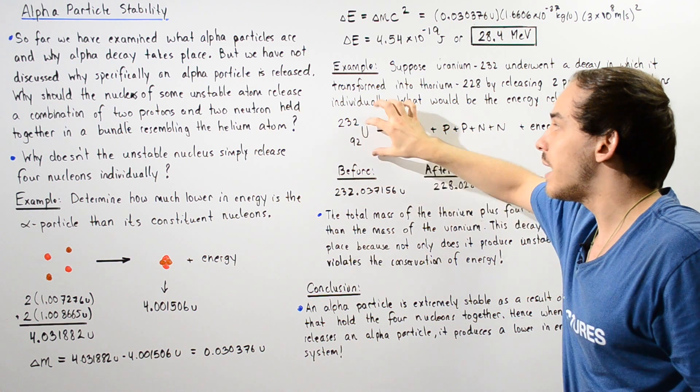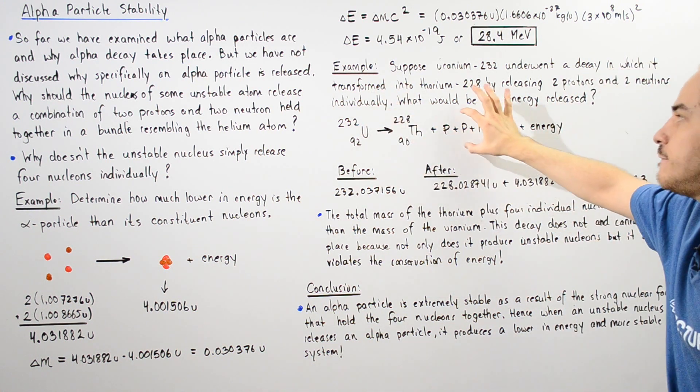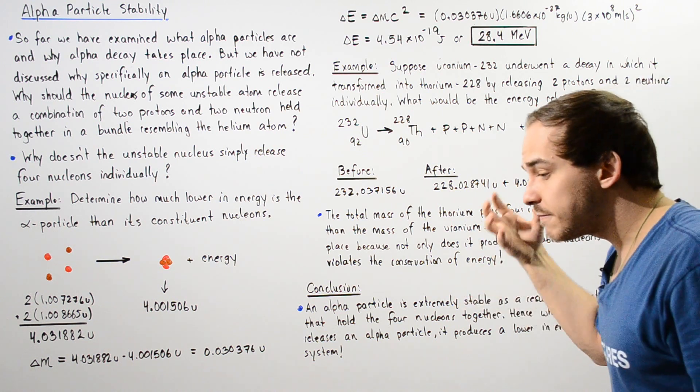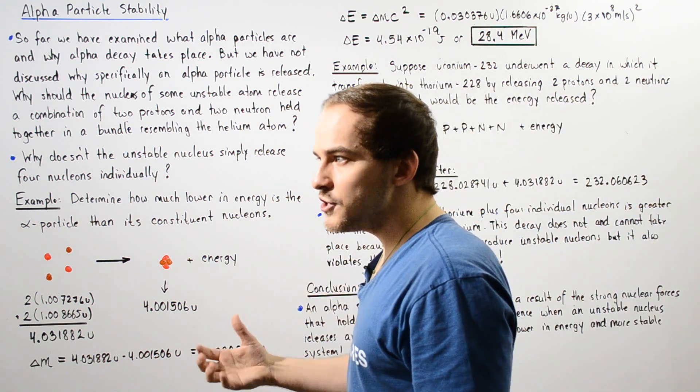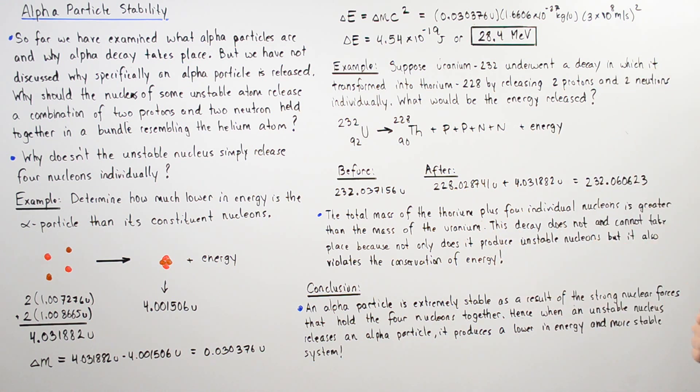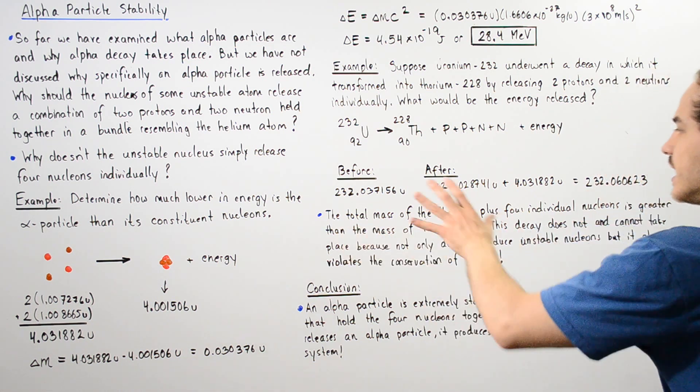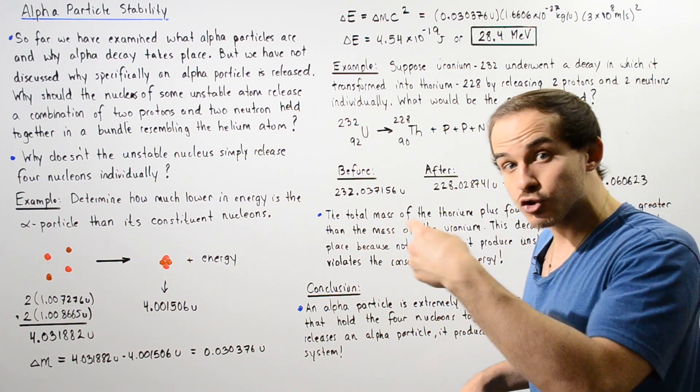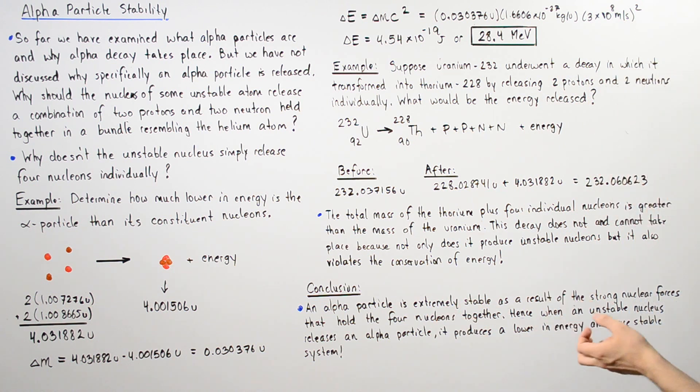In fact, energy must be absorbed by the Uranium to actually form this quantity. And so that means this violates the conservation of energy and such a reaction will not actually take place. So once again, the total mass of the Thorium plus the four individual nucleons is greater than the mass of our parent Uranium atom.